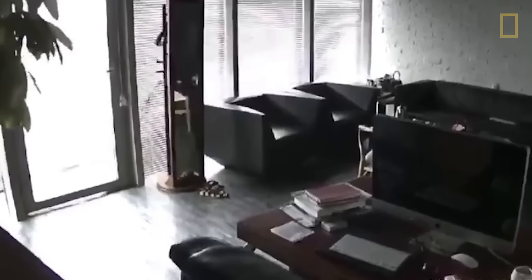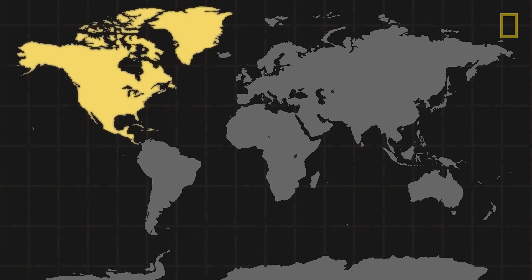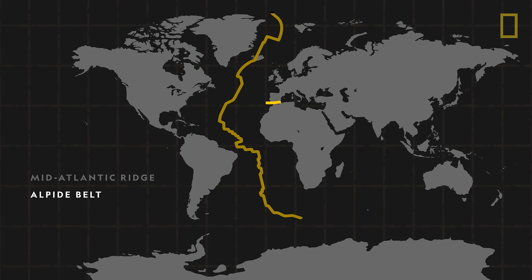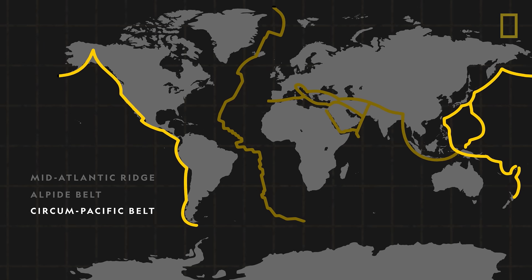Earthquakes occur around the world. They've been recorded on all seven continents, but most quakes take place in just three regions: the Mid-Atlantic Ridge, an underwater line that runs down the Atlantic Ocean; the Alpine Belt, which stretches from the Mediterranean to Southeast Asia; and the Circumpacific Belt, which traces along the edges of the Pacific Ocean and is where about 80% of all earthquakes occur. However, these areas experience the most earthquakes due to what lies beneath the surface.